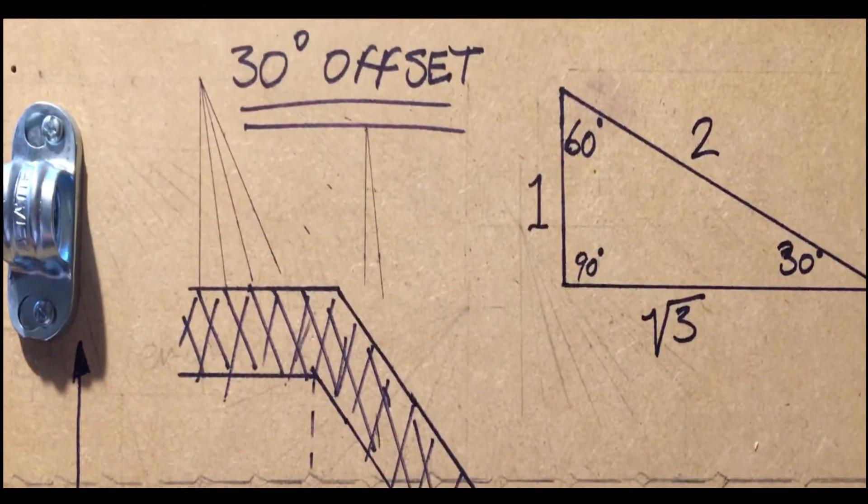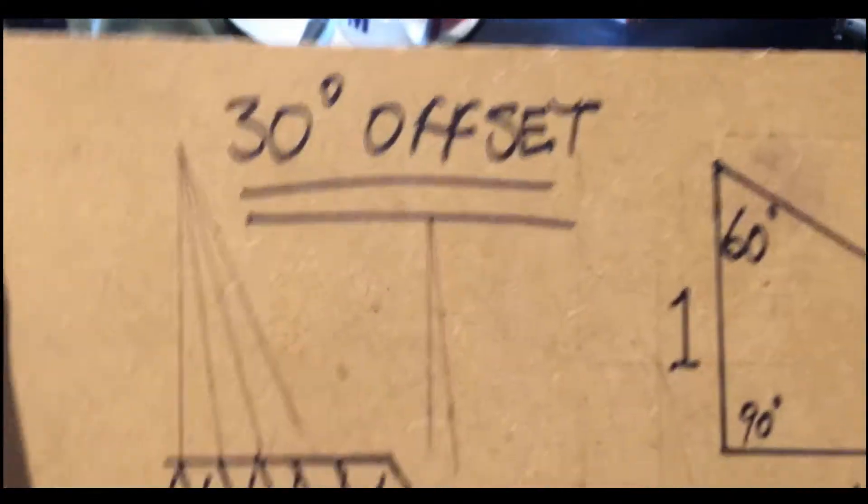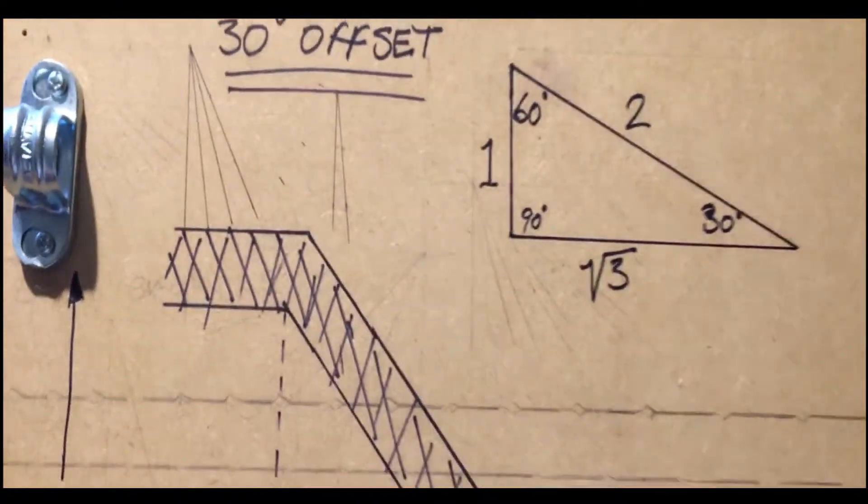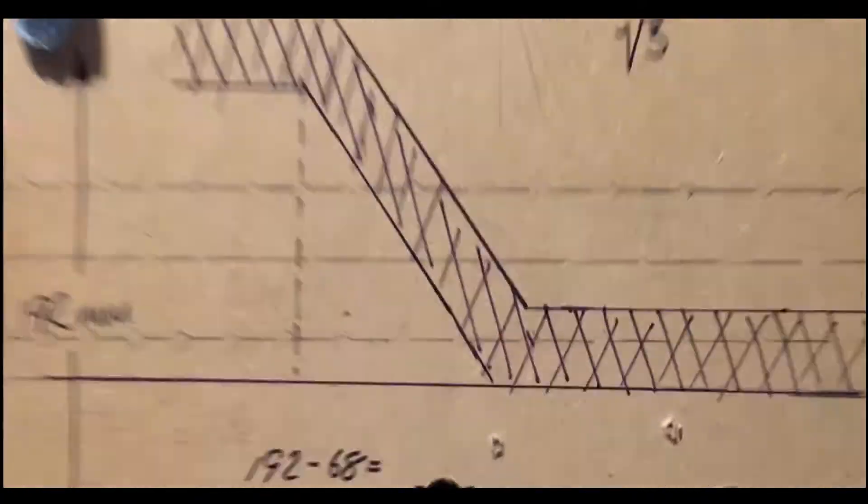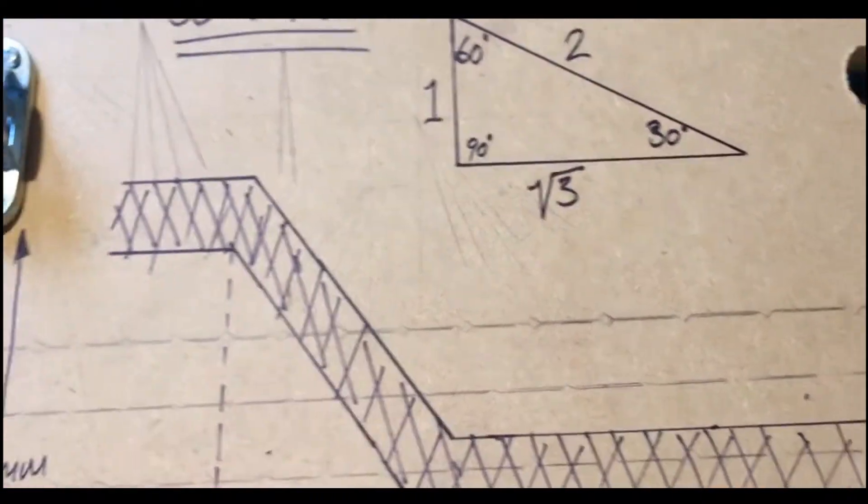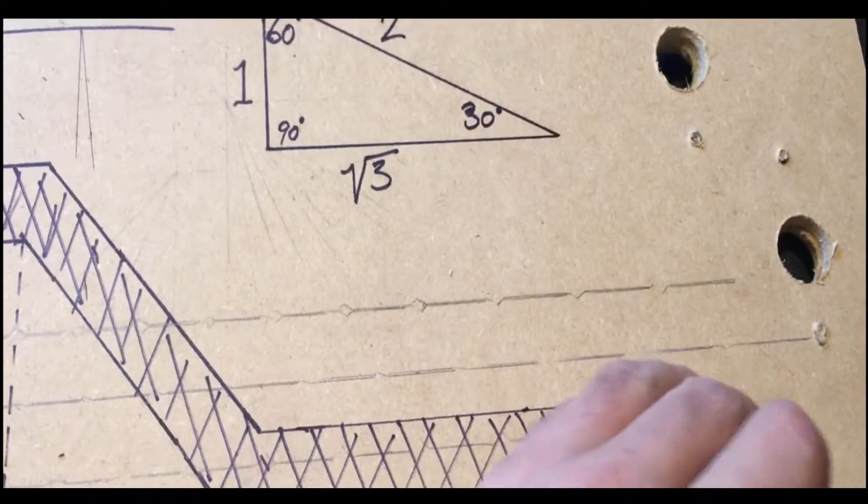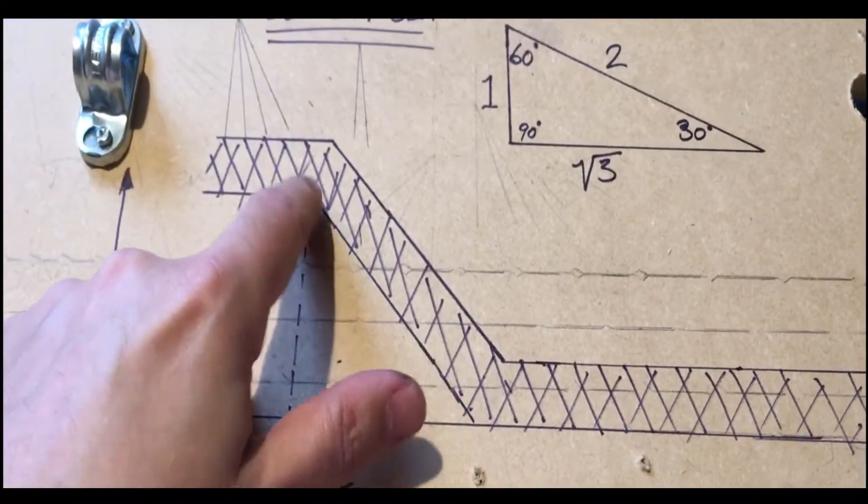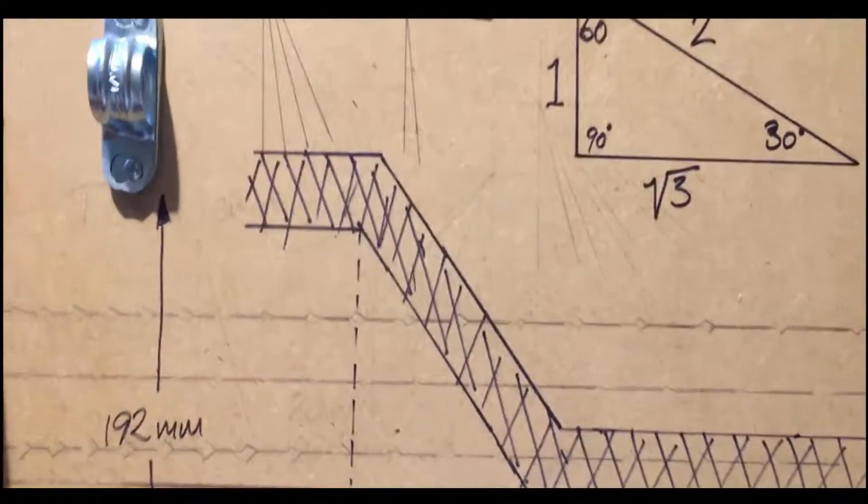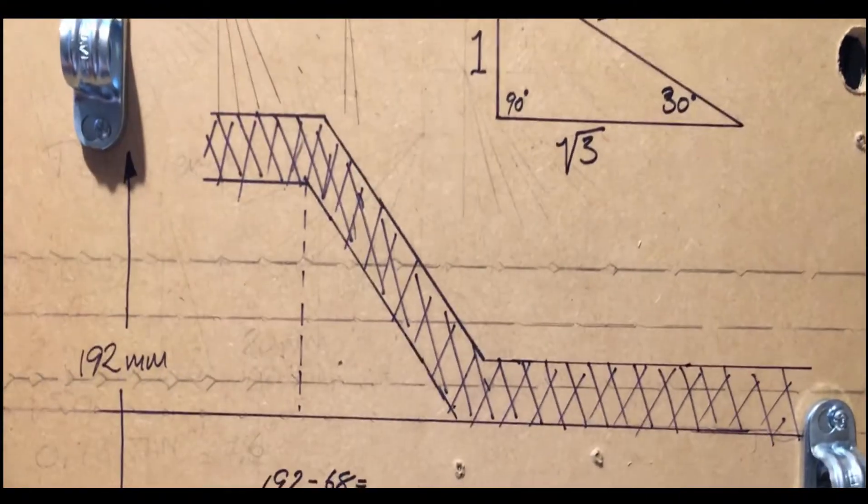Hello, in today's video I'm going to show you how to make a 30-degree offset in 20mm conduit. It's going to look like what we have here - it's going to come along, bend up 30 degrees, and then go through this piece of conduit. I've made some measurements here.